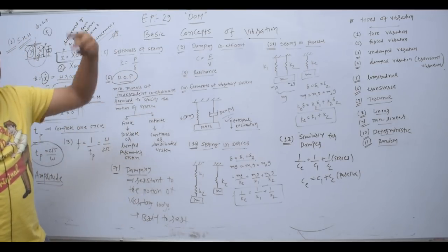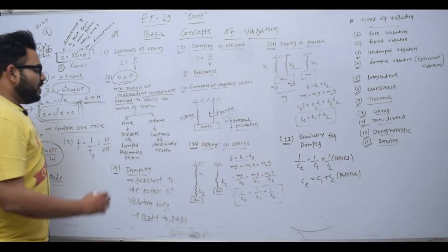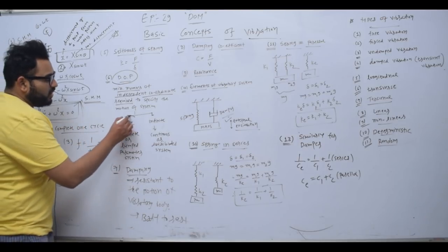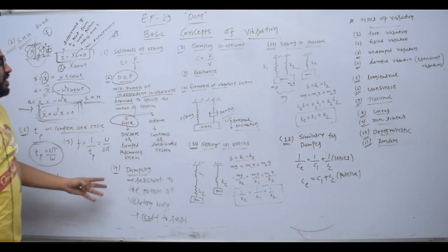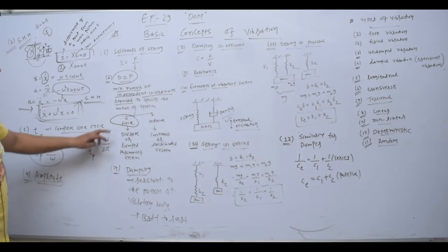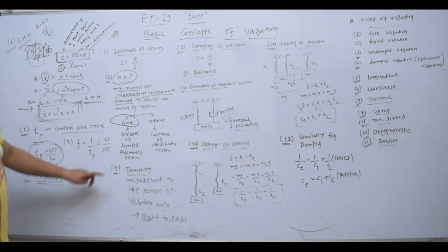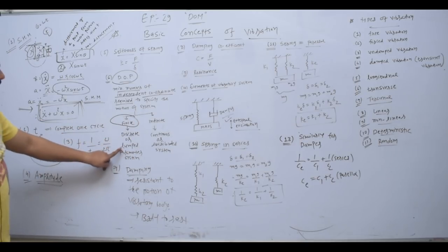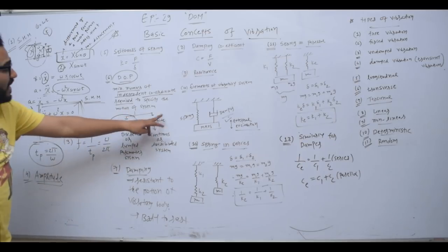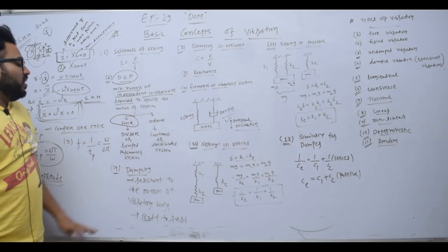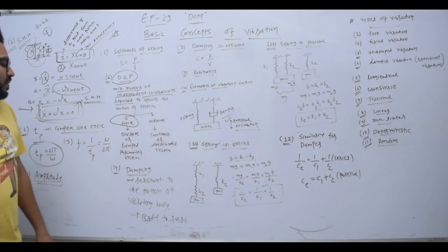If any system has a finite degree of freedom, it becomes a discrete or lumped parameter system. And if any system has an infinite degree of freedom, it becomes a continuous or distributed parameter system.